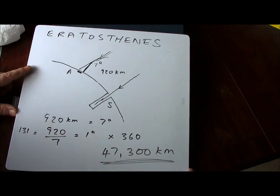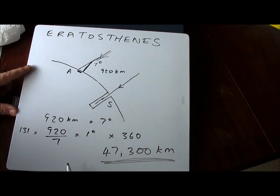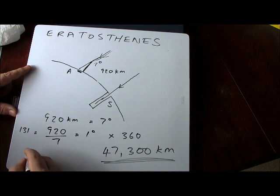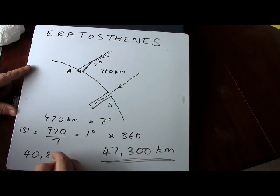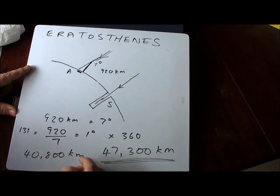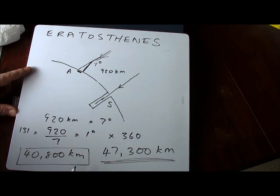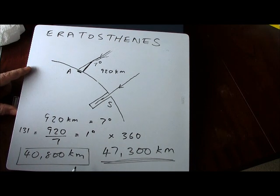That was approximately Eratosthenes' value for the circumference of the earth — something like 46,000 to 47,000 kilometers. The modern accepted value is 40,800 kilometers on average. You can see that Eratosthenes wasn't far off, and bearing in mind he did this in 250 BC, that's quite impressive.